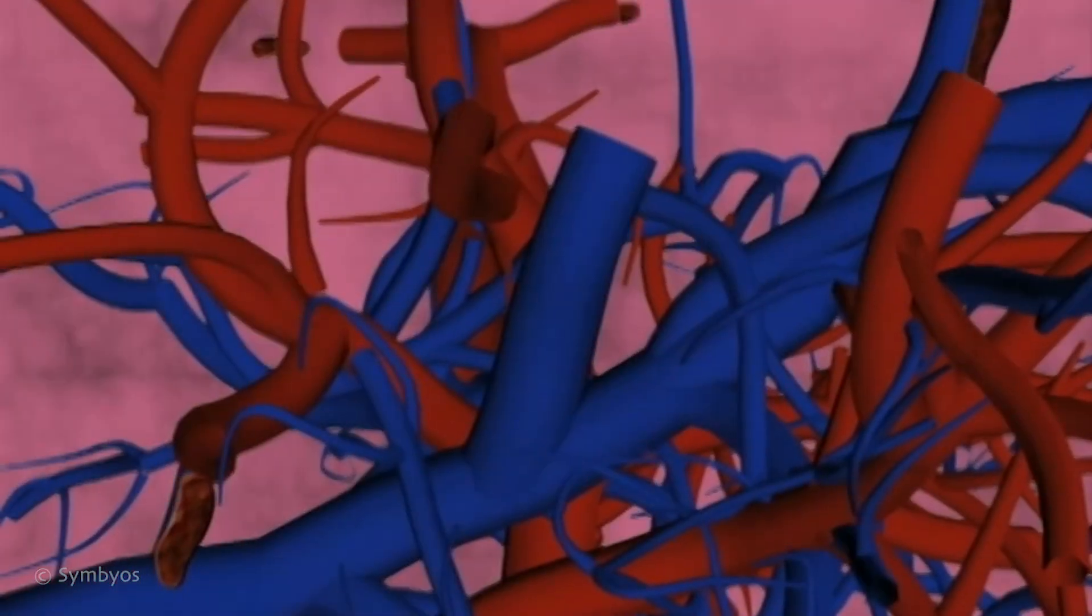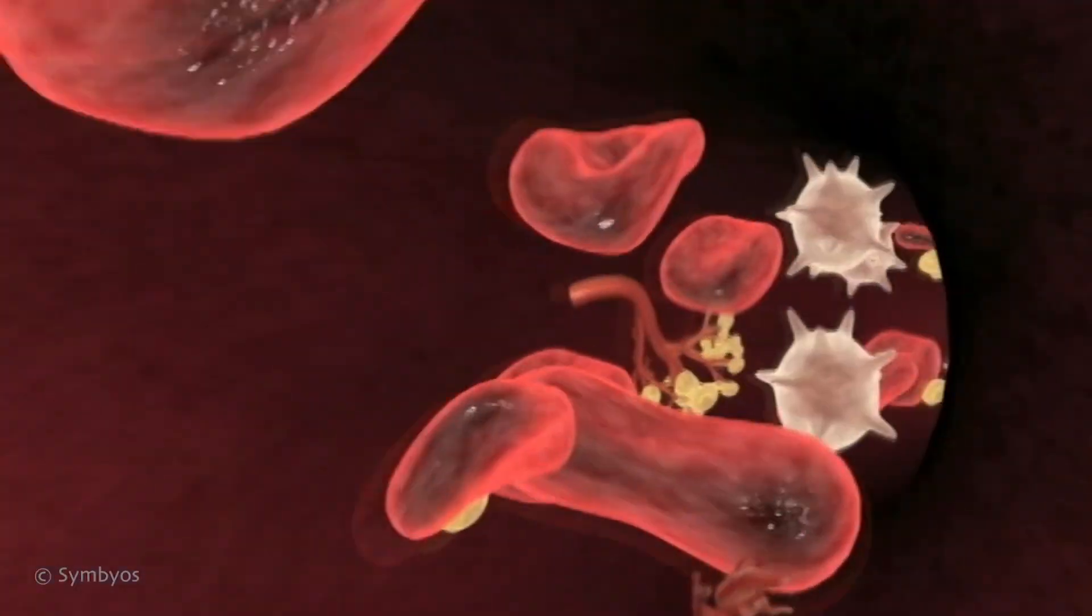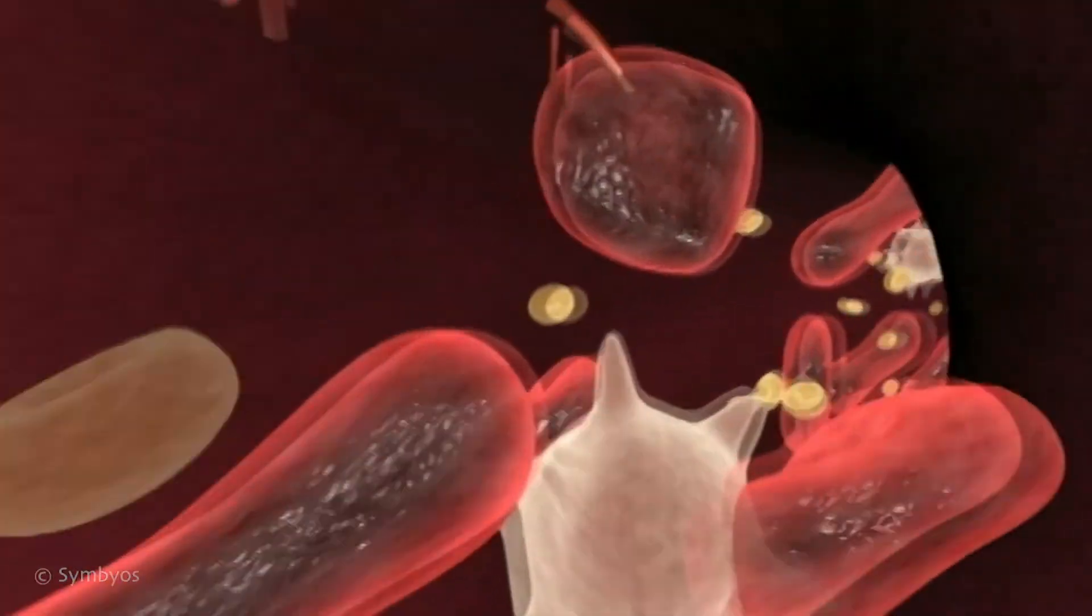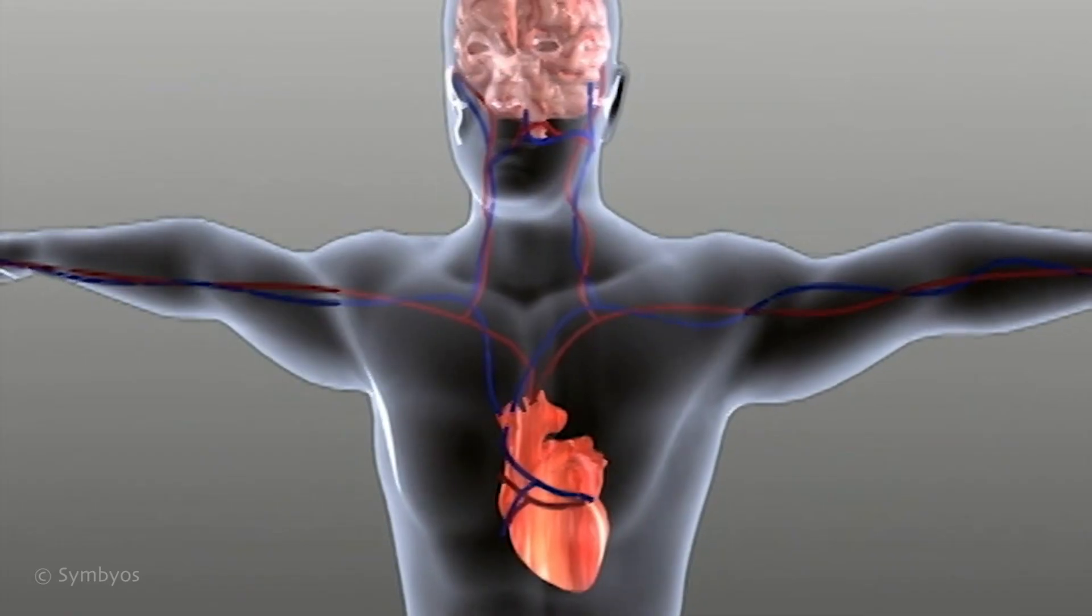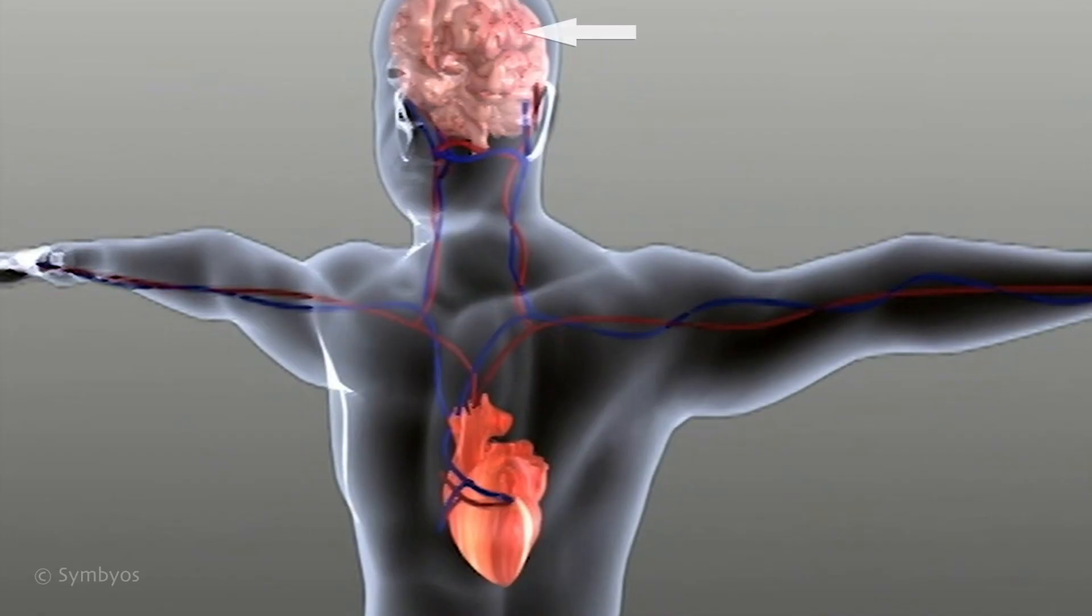Periodontal bacteria can enter the body's circulatory system through leaky blood vessels. Once inside, the bacteria can lead to blood clots and inflamed vessels, which constrict in diameter, leading to strokes, heart disease, heart attacks, and poor circulation in the extremities.